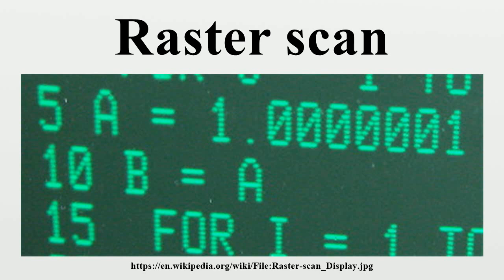In detail, each line consists of: a scan line, when the beam is unblanked and moving steadily to the right; a front porch, when the beam is blanked and moving steadily to the right; a sync pulse, when the beam is blanked and moves rapidly back to the left; and a back porch, when the beam is blanked and again moving steadily to the right. The porch provides blanking to allow fall time and settle time for the beam to move back to the left and for ringing to die down.